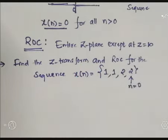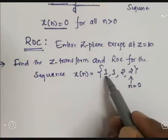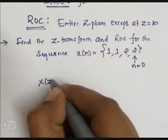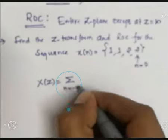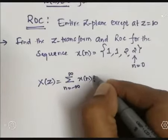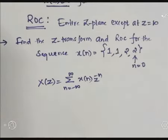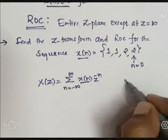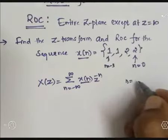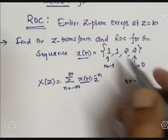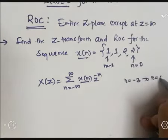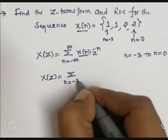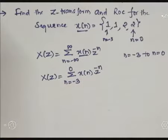At n equal to 0, and this one is n equal to minus 1, this one is n equal to minus 2, this one is n equal to minus 3. So we can say this sequence has four samples which vary from n equal to minus 3 to n equal to 0. First I will write the definition of Z-transform: X(Z) equals summation from n equal to minus infinity to plus infinity of x[n] Z to the power minus n. For the given sequence, limits vary from n equal to minus 3 to n equal to 0, so I rewrite: X(Z) equals summation from n equal to minus 3 to 0 of x[n] Z to the power minus n.